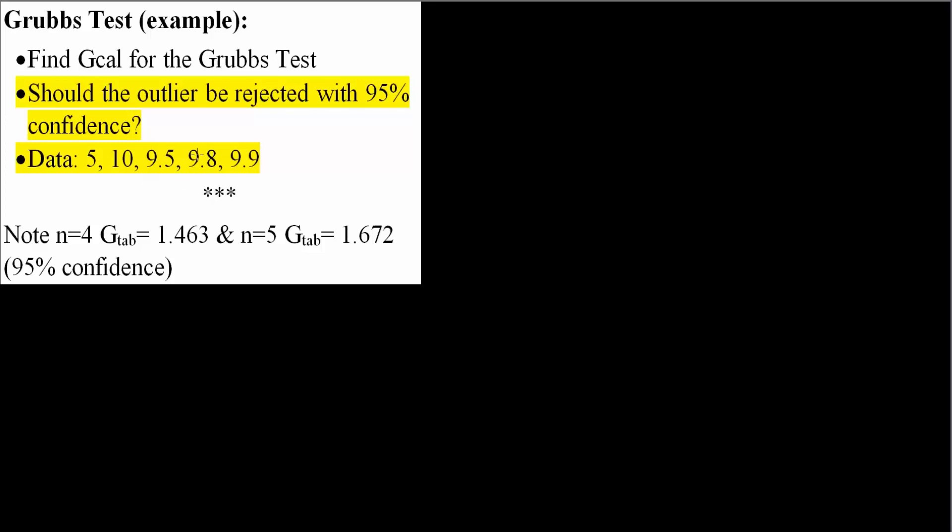Now this is an example Grubbs test problem. We want to find Gcalc for the Grubbs test and determine if the outlier should be rejected with 95% confidence. Our data is 5, 10, 9.5, 9.8, and 9.9, where 5 is the outlier. Let's get started.